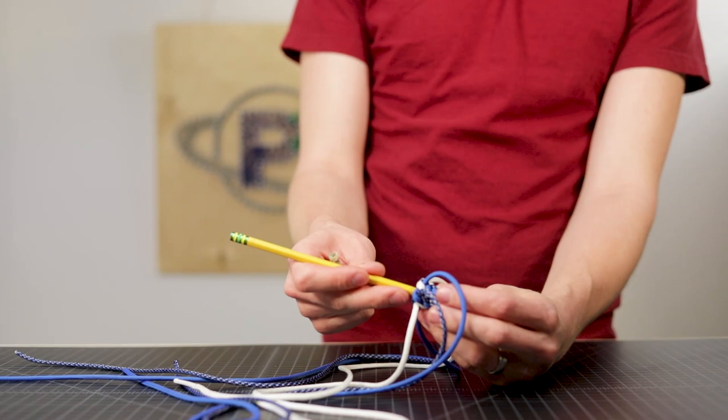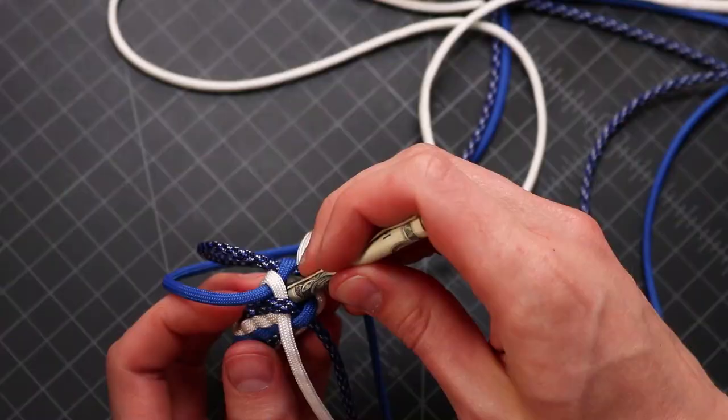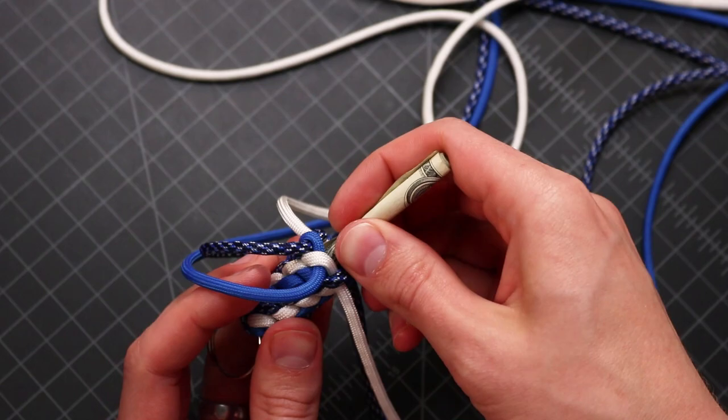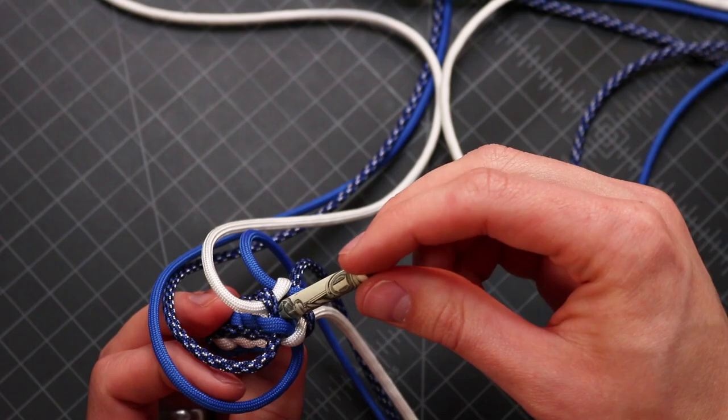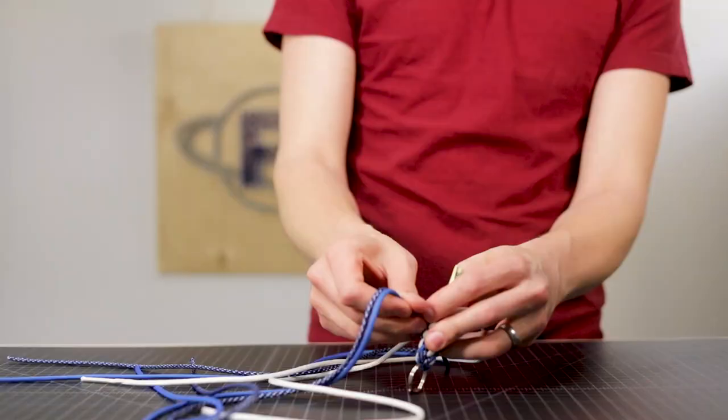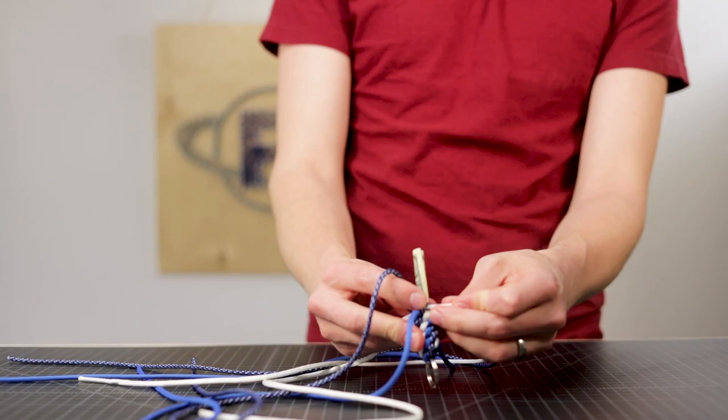But now with that pencil it is wide enough to fit a dollar bill down in there. If you're going to the trouble of hiding it you might want to go with bigger than a one dollar but whatever. So then leaving that dollar bill in there you can go ahead and keep doing your weave.